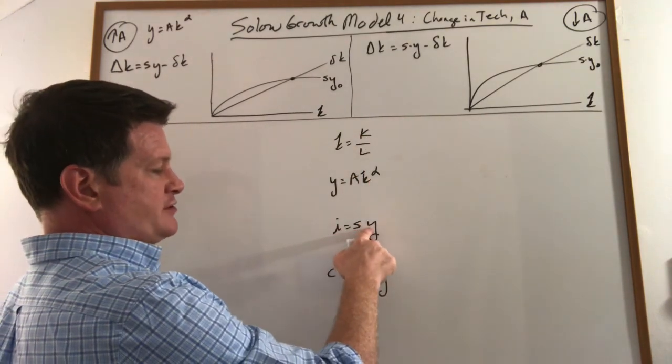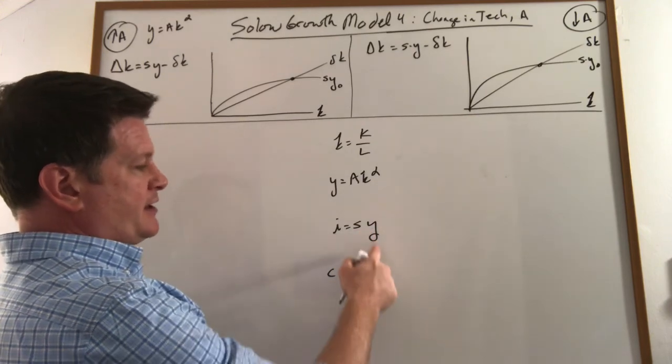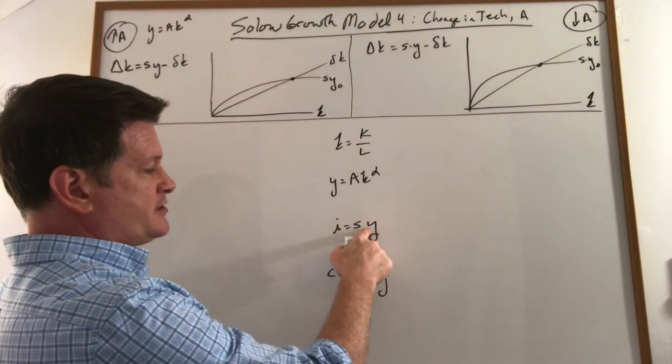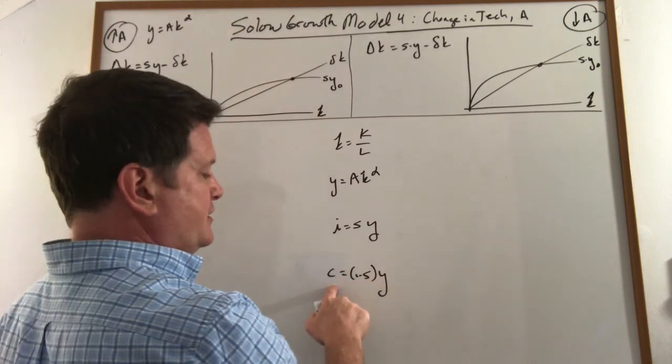Investment is a fraction of GDP. Consumption is a fraction of GDP. Basically, out of your nation's income, you save some fraction of it and invest that amount, and the amount you don't save is what you consume.